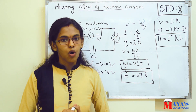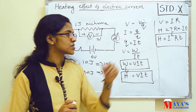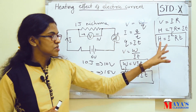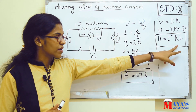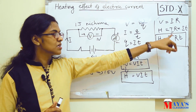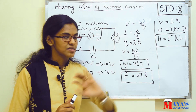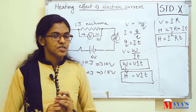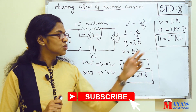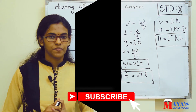This is Joule's law equation: H is equal to I squared RT, where H is the amount of heat, I is the current, R is the resistance, and T is the time. This is Joule's law equation, H is equal to I squared RT.